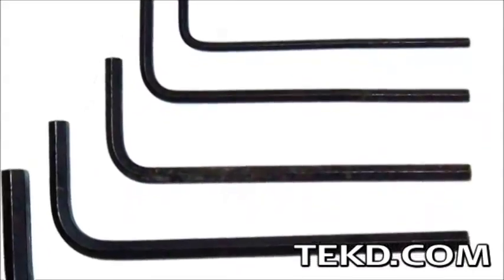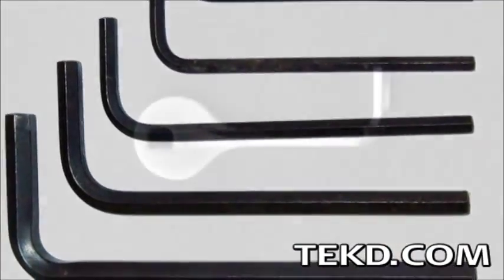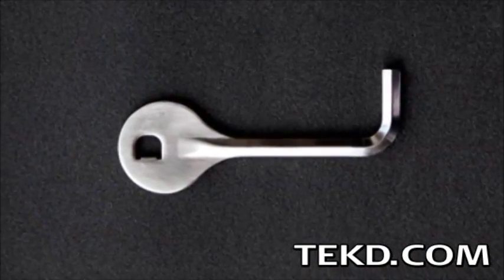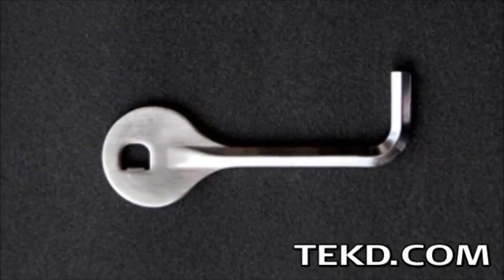Torque on a typical Allen wrench is limited by the thickness and length of the wrench, giving D-key an advantage providing the user with 78% more surface area.